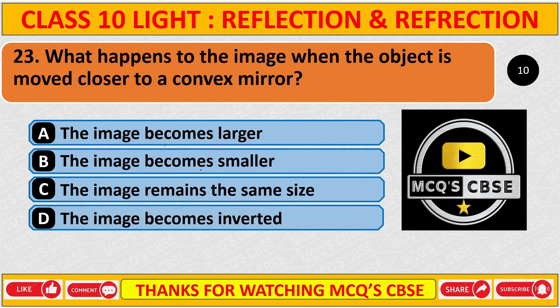What happens to the image when the object is moved closer to a convex mirror? The correct answer is B: the image becomes smaller.